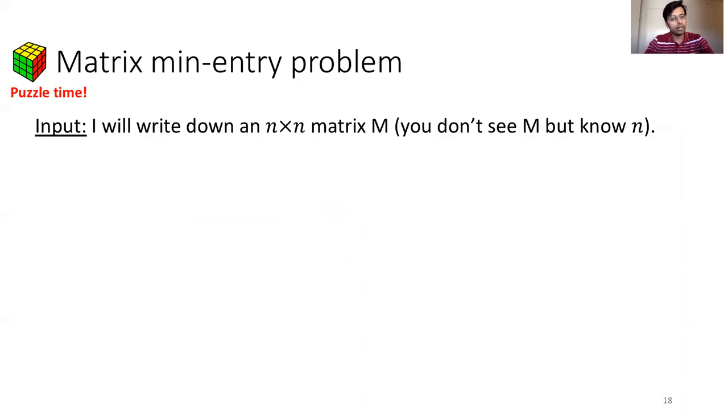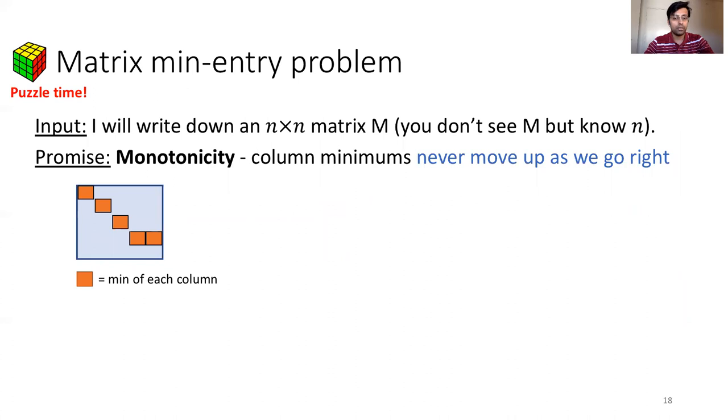Here the input is an n cross n matrix M, which is with me. You don't get to see M, but you know the value of n, that is the dimension of the matrix. I will also make the following promise to you. The column minimums never move up as we go right. This property of the matrix is known as the monotonicity property.